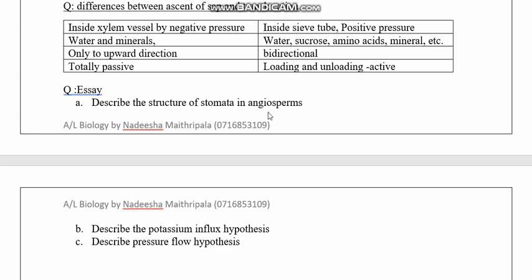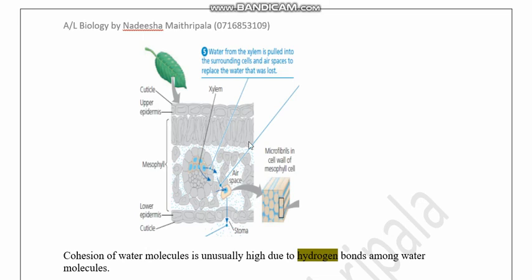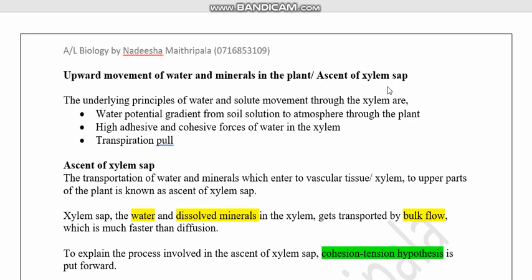An essay question to consider: describe the structure of stomata in angiosperms, describe the potassium influx hypothesis, and describe the pressure flow hypothesis. In the diagram shown, you can observe the cohesion-tension theory — transpiration causes loss of water from the leaves, and water from the xylem is pulled into the leaf cells to replace it. This explains the ascent of xylem sap, driven by three key principles discussed in this lesson.